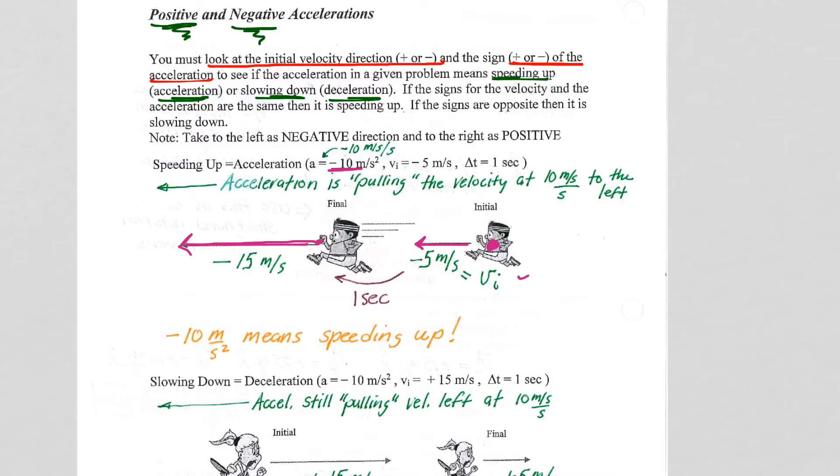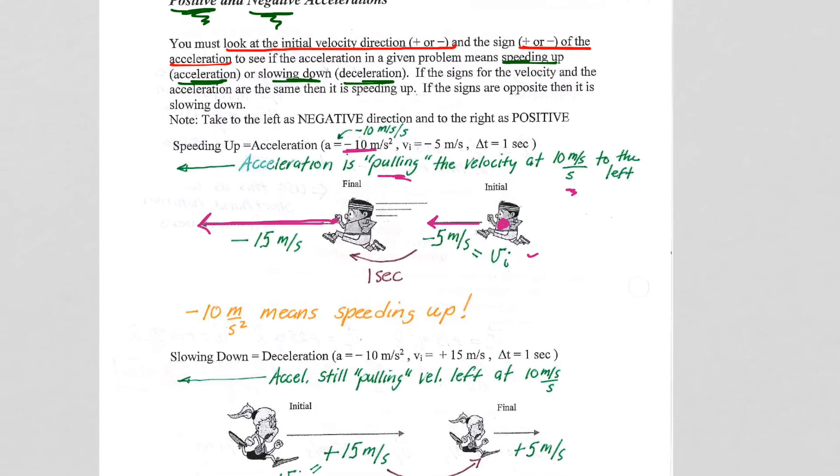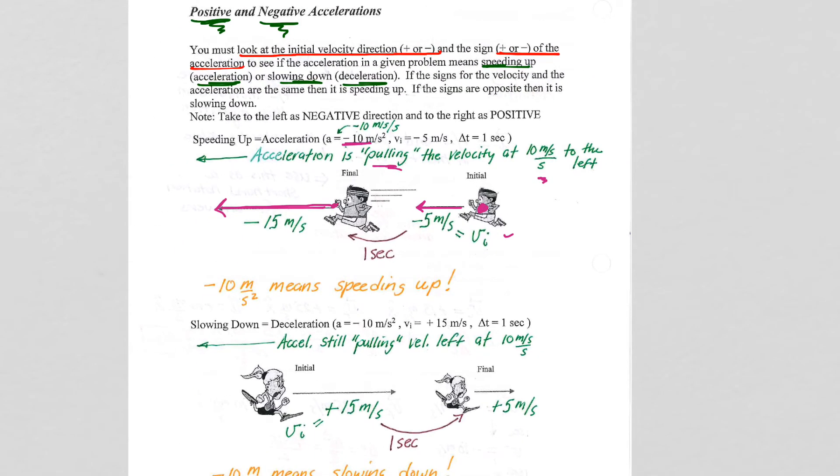The acceleration was pulling backward on the velocity vector, which was already backwards, so it was speeding up. So, in this case, negative 10 meters per second squared means speeding up, accelerating. So, the acceleration is pulling the velocity to the left at 10 meters per second every second. So, for this example, negative 10 means speeding up.